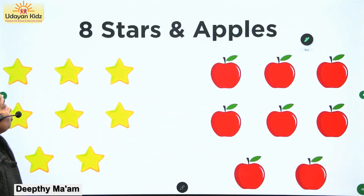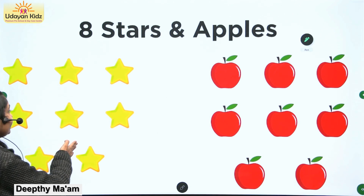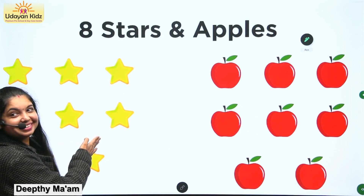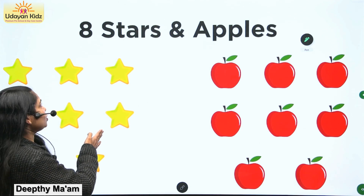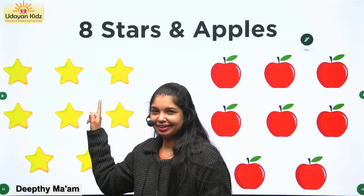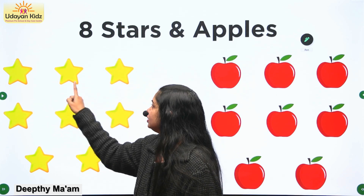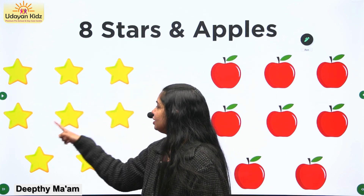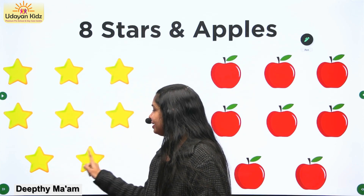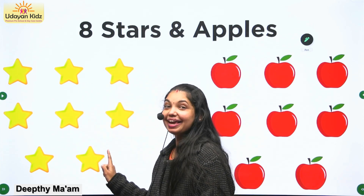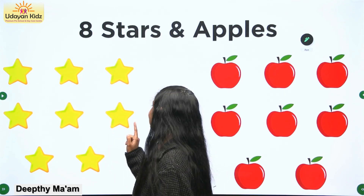What are these? These are stars. So how many stars are there? Let's count the stars. One, two, three, four, five, six, seven, eight. Eight stars! How many stars are there? Eight stars. Very good.